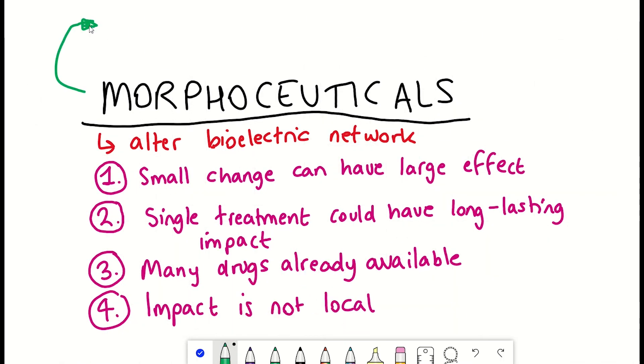And so all in all, this morphoceutical idea is more of a top-down approach which, if effective, could coordinate a myriad of downstream responses such that treatment may only be needed once, as effectively you make a tweak in a higher-level system and then you just let the body deal with the complexities.